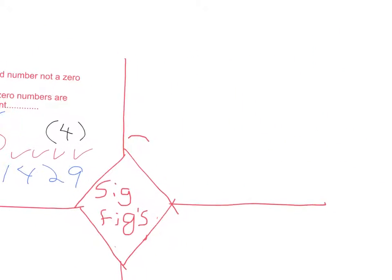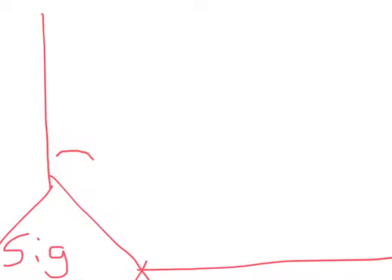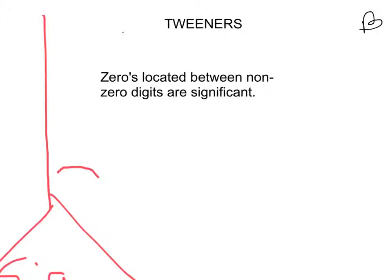This is going to be quadrant B. So we all know we're in the top right-hand corner now. Once again, we're trying to come up with something catchy for you. Calling these tweeners. That's our second category that we're going to deal with. The tweeners will be simply this: zeros, just like you're seeing here, located between non-zero digits, are significant.